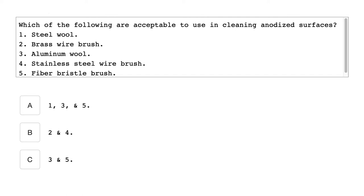Which of the following are acceptable to use in cleaning anodized surfaces? 1. Steel wool. 2. Brass wire brush. 3. Aluminum wool. 4. Stainless steel wire brush. 5. Fiber bristle brush. Numbers 3 — aluminum wool — and 5 — fiber bristle brush — are acceptable to use in cleaning anodized surfaces.